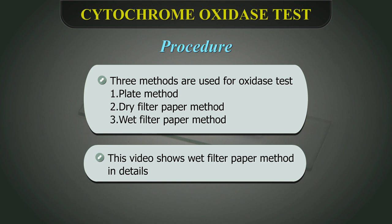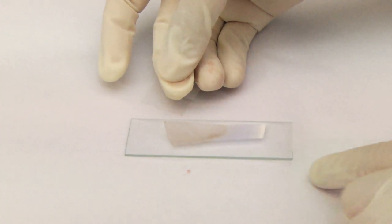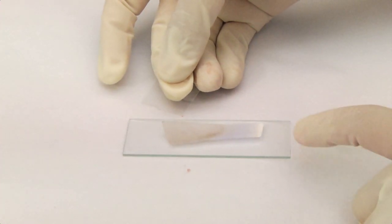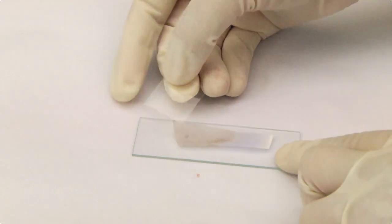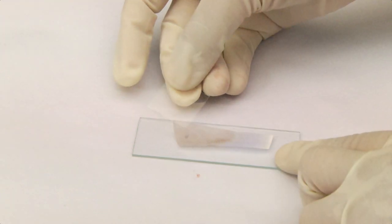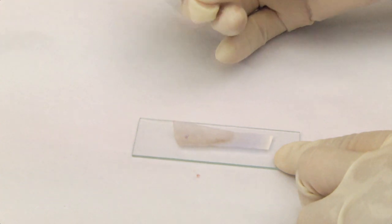Procedure: Using a cover slip, glass rod, or wooden applicator stick, pick a colony of a known strain of Pseudomonas aeruginosa and smear it on the filter paper strips dipped in freshly prepared oxidase reagent. This serves as a positive control.